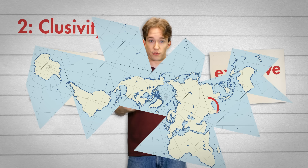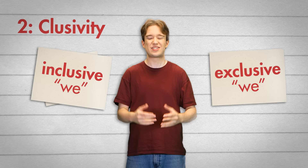In languages with clusivity, there are different words for 'we' depending on whether you're including the listener or not. It shows up in languages in South Asia, Australasia, and all over the world, apart from Europe. And I really wish English had clusivity, because once you describe it, it's a blindingly obvious missing thing that we could really use.